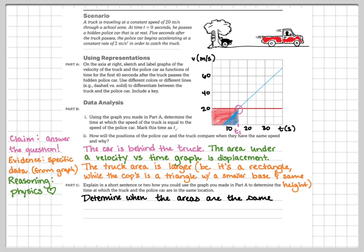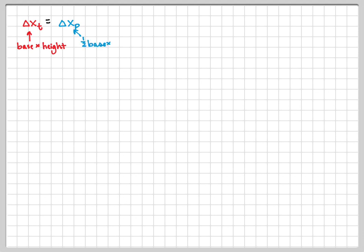If we did want to determine when and where they met up, we would be looking for the time when the two areas are the same. To be precise, we set this up as an equation. The displacement of the truck equals the displacement of the police car at some time T. The truck's graph makes a rectangle — base times height — and the police car's graph makes a triangle — one-half base times height — but the triangle's base is modified by the delay time TD, representing the five-second head start the bad guy got.